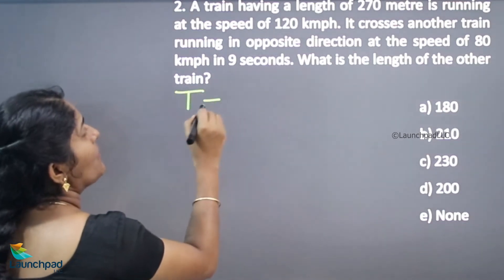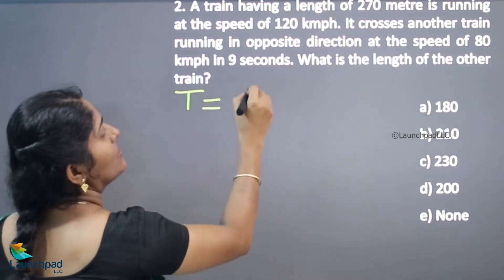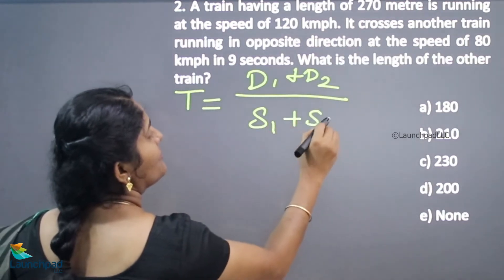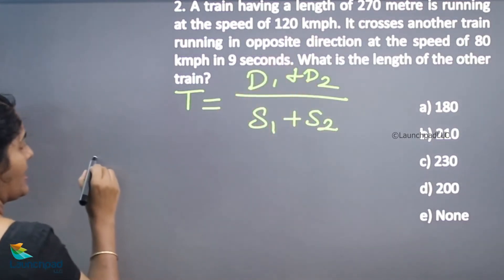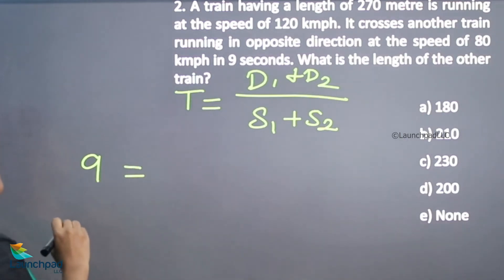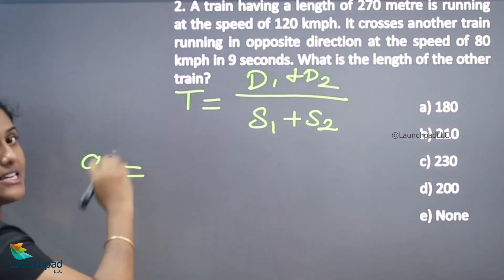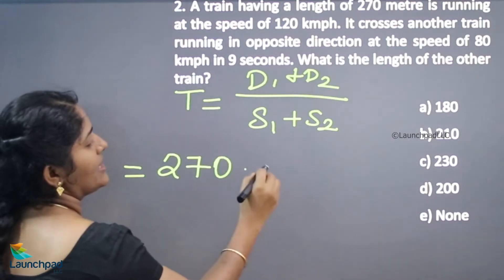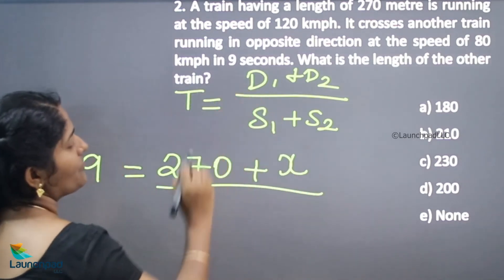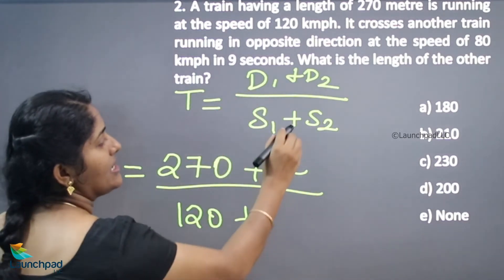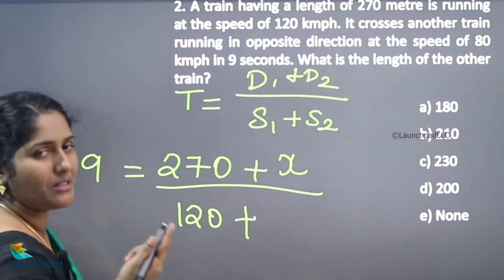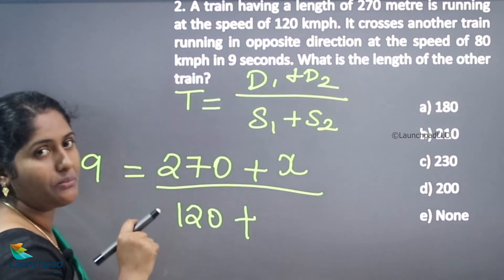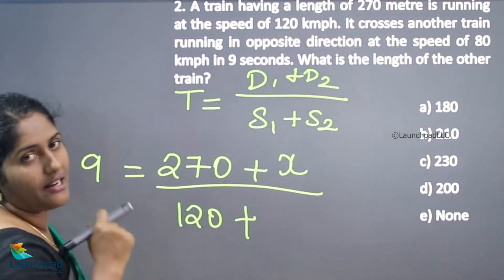As usual, we use: time equals distance of train 1 plus distance of train 2, divided by speed of train 1 plus speed of train 2. Time taken is 9 seconds. Distance of train 1 is 270 meters; we don't know the second train's distance. Speed of train 1 is 120. Why do we add both speeds? Because they are running in opposite directions — opposite direction means we add both train speeds.